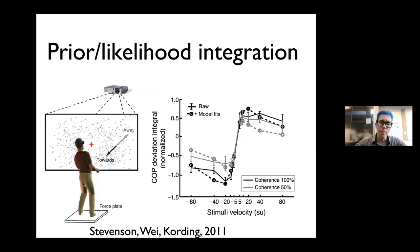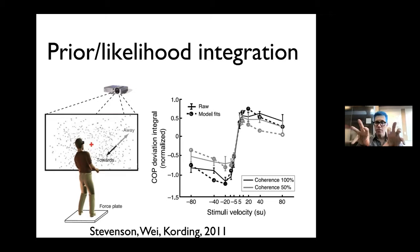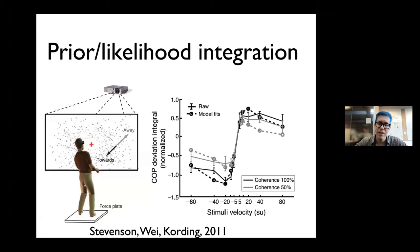Those were the Alais and Burr experiments. Let me give you an example of our own experiment. What we did is we put people onto a force plate — a force plate measures how their body moves. Then we made the dots move left or right. If I show you lots of dots that move leftwards, it will feel to you as if your body is moving rightwards. That's the standard effect of vection.